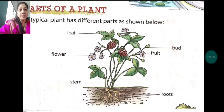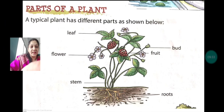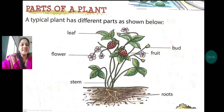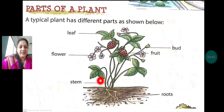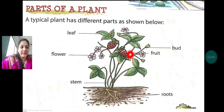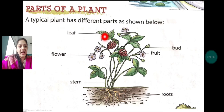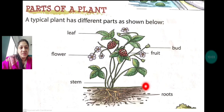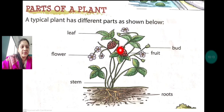So today we studied the parts of a plant. A typical plant has different parts — beginning with roots, then stem, then flowers, then fruit, then bud, and then leaf. So there are six parts of a plant that complete a whole plant. It always starts with roots, then comes stem, then flower, then fruit, then bud, then leaves.